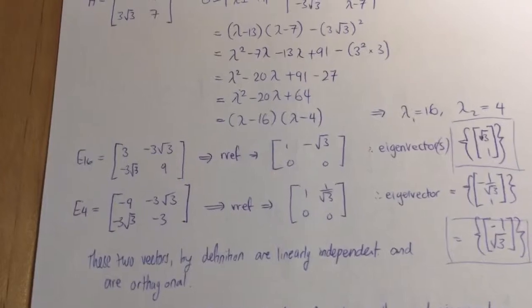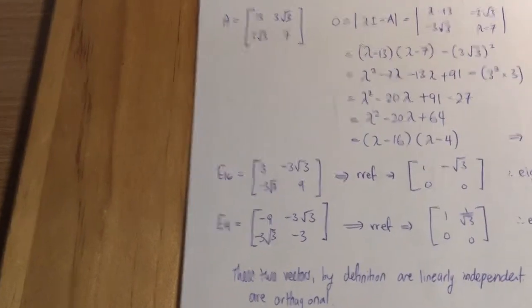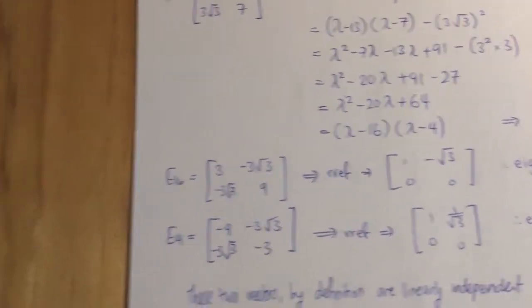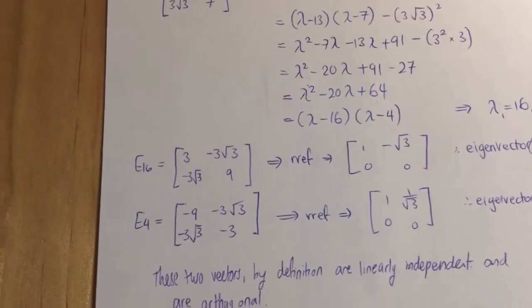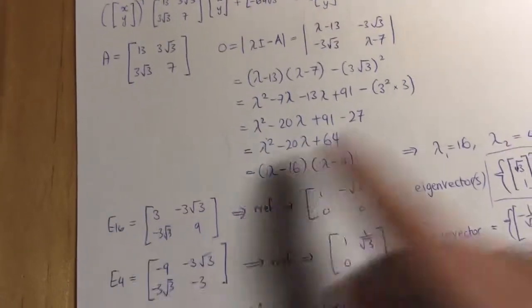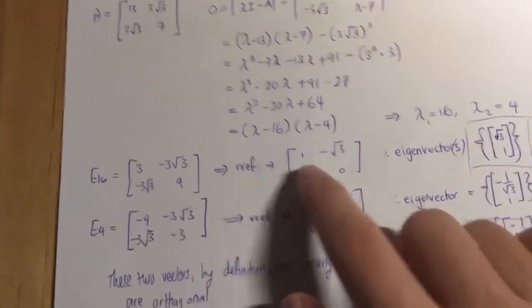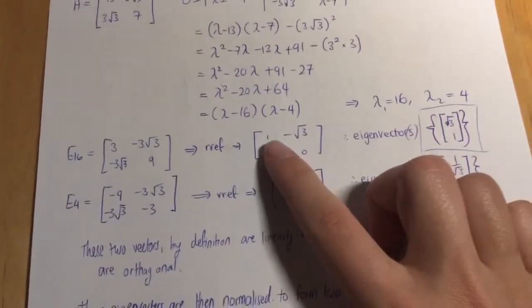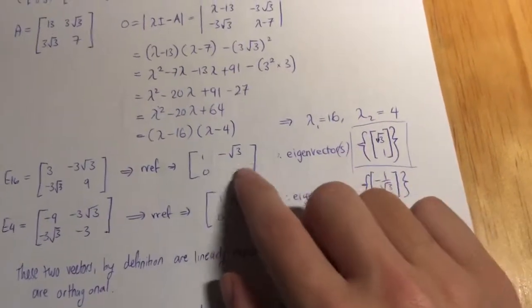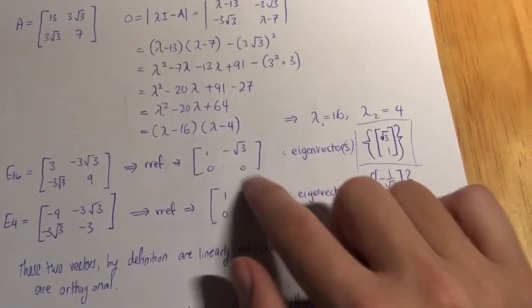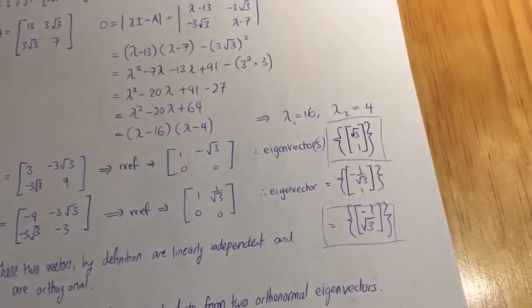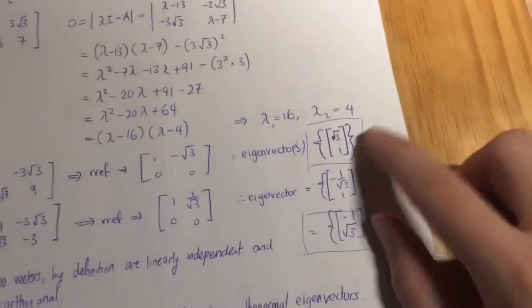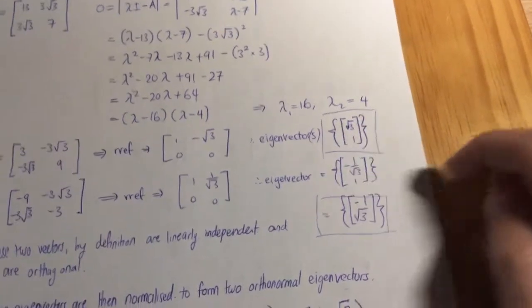So now that we've got eigenvalues, we need to find our eigenvectors. The way we do that is we evaluate λI - A with the eigenvalues. I'm looking at E₁₆ here, which is the eigenspace evaluated when λ = 16. So I've plugged 16 in: 16 - 13 gives us 3, and λ being 16, 16 - 7 gives us 9. We put this in reduced row echelon form using our calculator. We get that, and hence we get the eigenvector. We have a free variable here and a pivot column. When we move that to the other side, it's going to be √3 and 1 multiplied by T. We just want that vector, so it's √3 and 1.